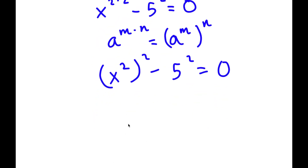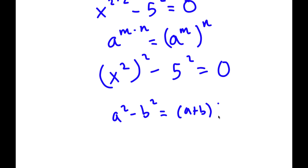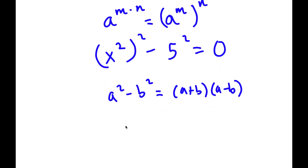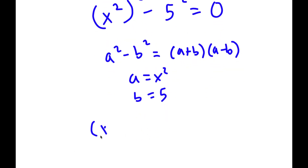Now if I have something in the form a squared minus b squared, this is equal to a plus b times a minus b. So in this case, a is equal to x squared and b is equal to 5. So now I have x squared plus 5 times x squared minus 5 is equal to 0.